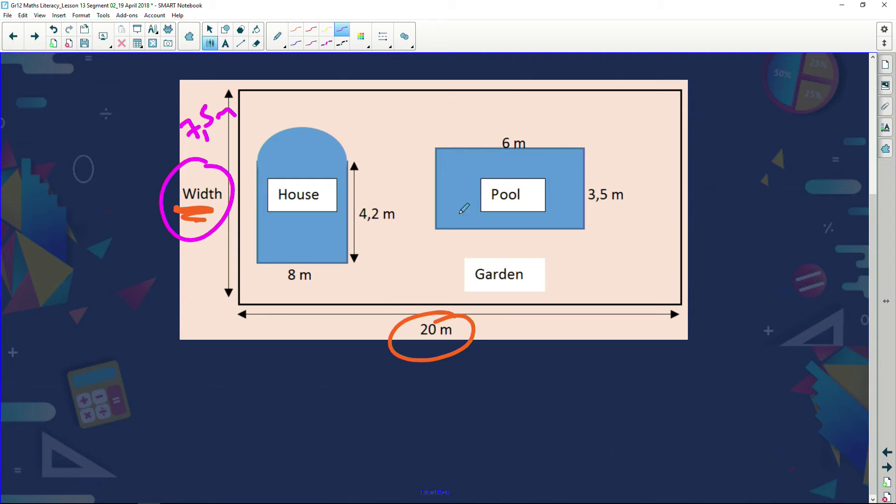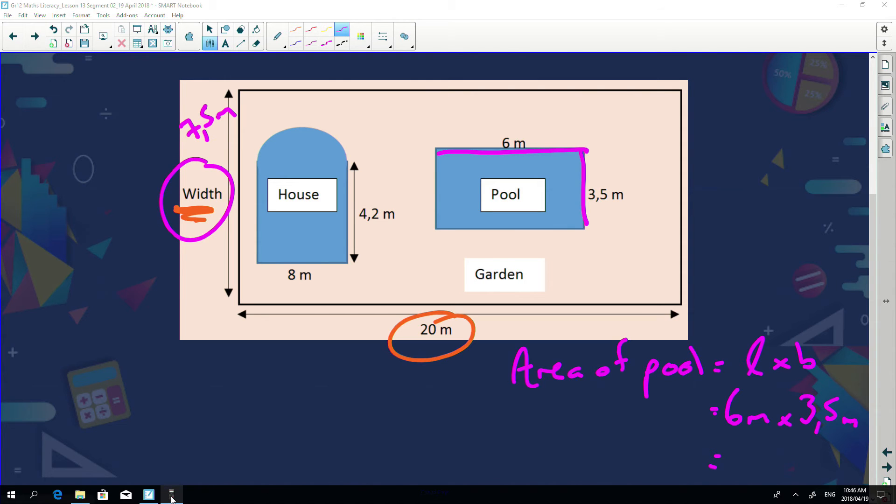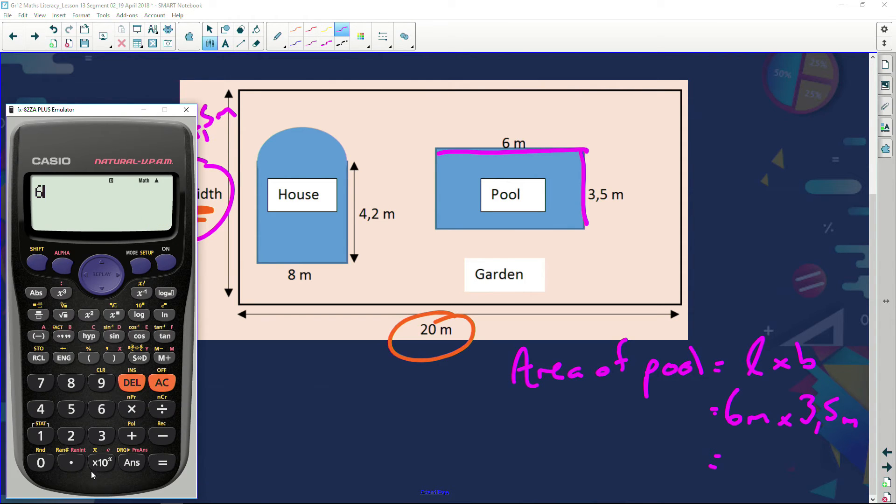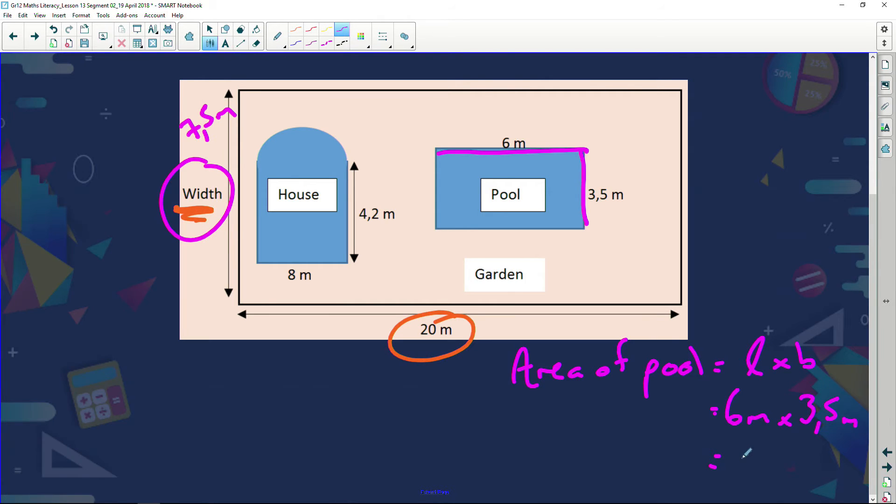So we're starting with the basic one. Let's start with our actual pool. And I'm going to say area of the pool is going to be length times breadth. The length of the pool is 6 meters and the breadth of the pool is 3.5 meters. So let's now multiply this out. 6 times 3.5. 6 multiply by 3.5. And I'm going to get an answer then of 21. So I've got 21 meters squared.